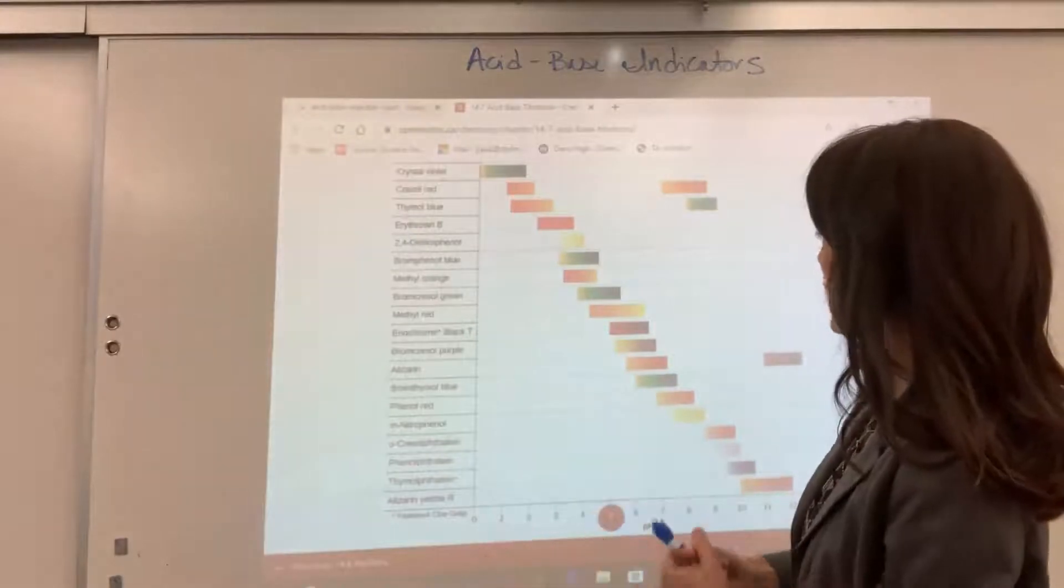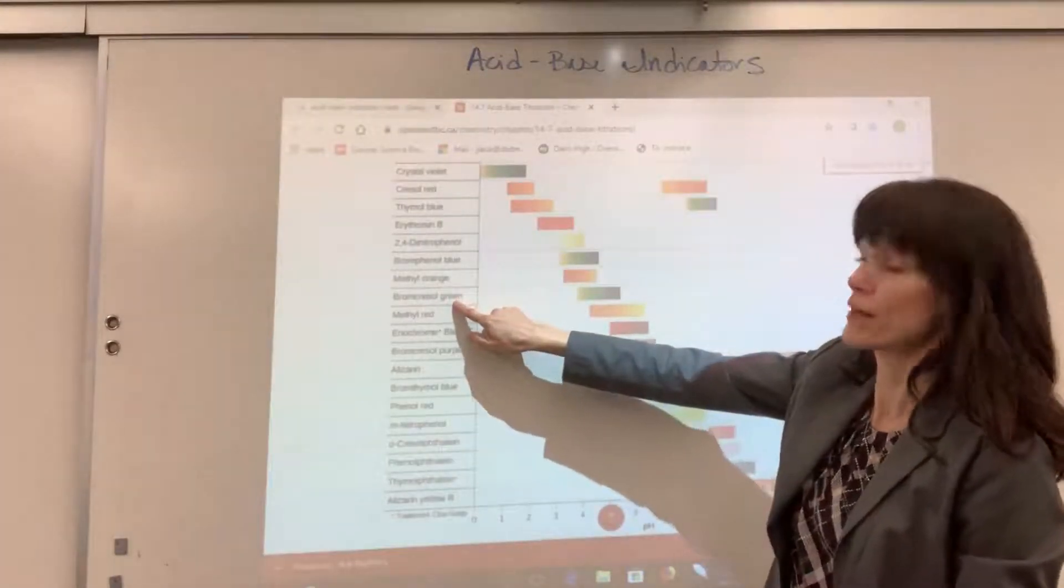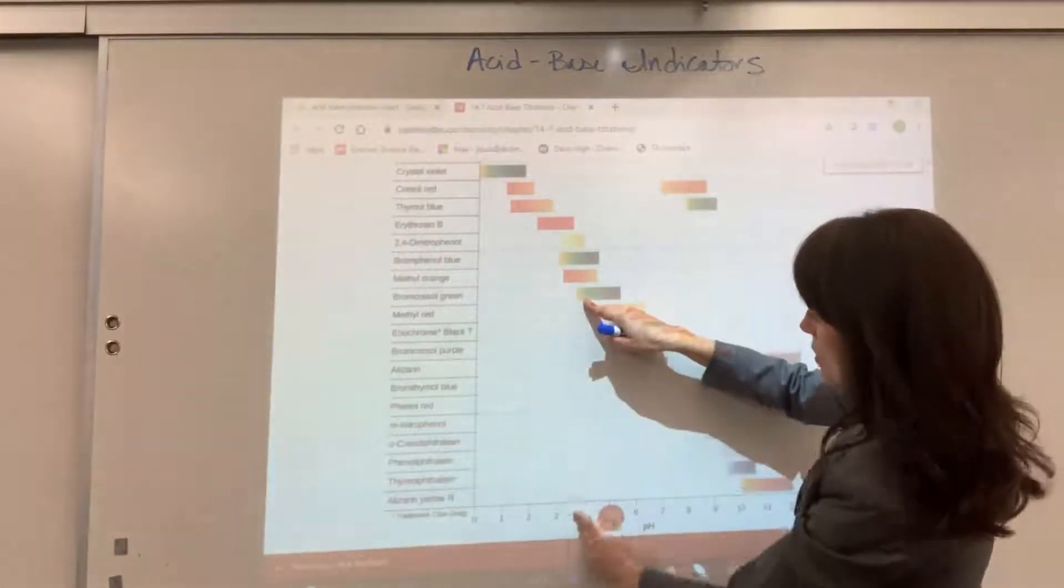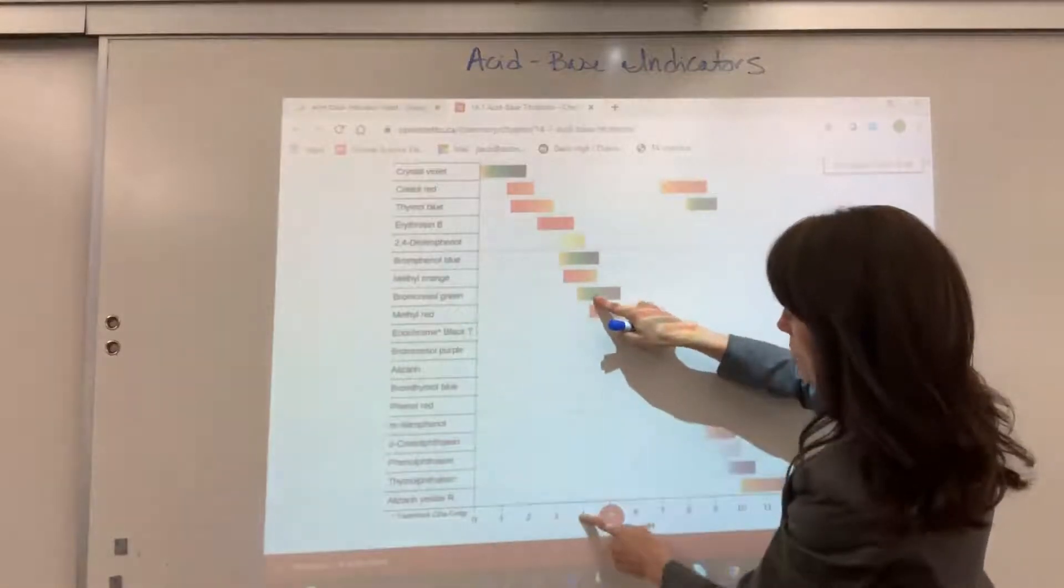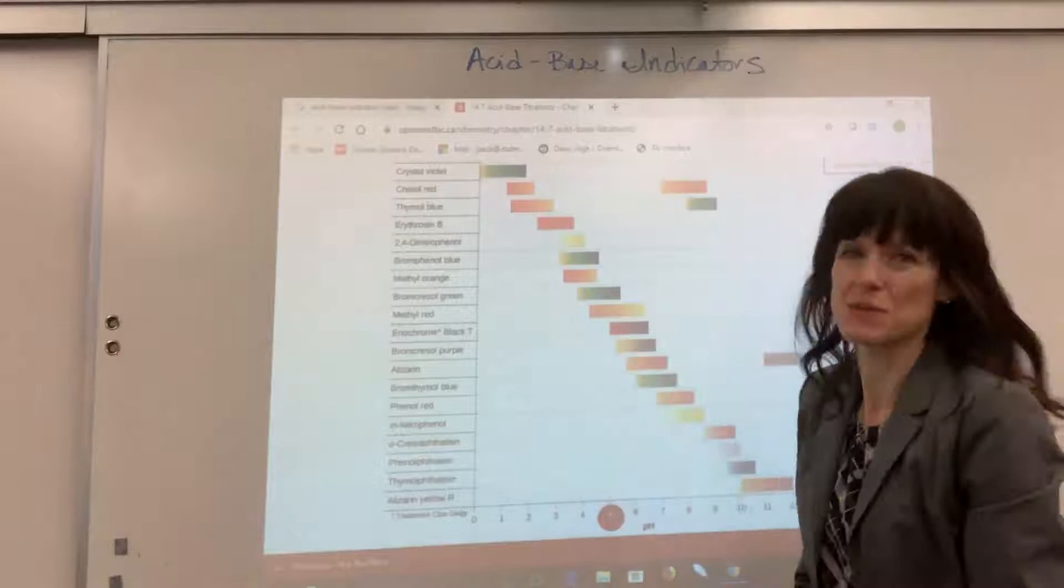Let me give you one more as an example. This is kind of interesting. This bromocresol green actually changes three colors. When the pH is less than 4, it's yellow. When it's a pH of 4, it's green. And then when it's a pH of 5, it's blue.